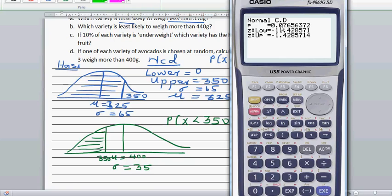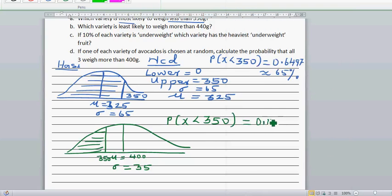It is 0.0765. If you change this as a percent, it is 0.0766. That is 7.66 percent, you can say it is 8 percent. So 8 percent of this F variety, the probability that it weighs less than 350 grams is 8 percent.